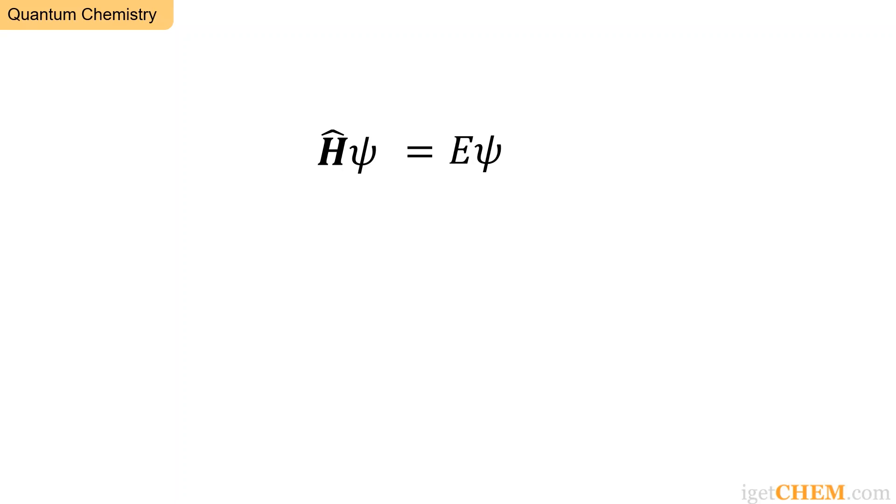Let's say our system is one-dimensional. In this case, the wave function psi is a function of x. Representing this explicitly, we have H psi of x equals E times psi of x. On the left side, H is an operator.